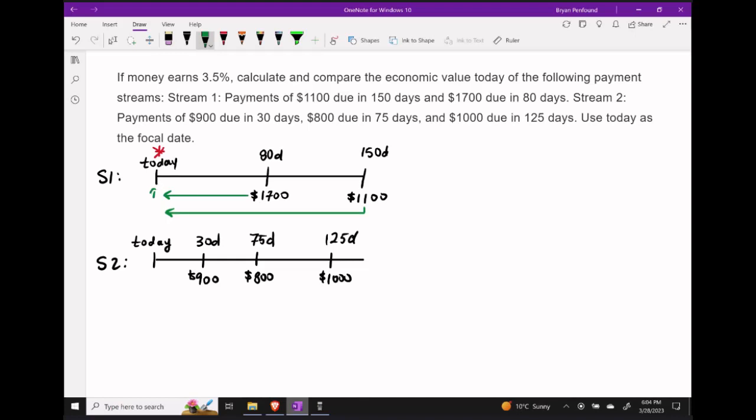First, calculate the principal amount of a future value of $1,700. Two, calculate the principal amount of a future value of $1,100. And three, add these up to get the fair market value of this stream of payments today.